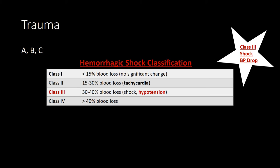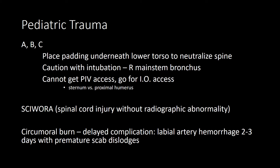There is a chart for the classifications of hemorrhagic shock, Class 1 through 4. Class 1 is less than 15% blood loss with no significant changes. Class 2 is 15 to 30% — that's when you start seeing compensatory mechanisms kick in and the patient will have tachycardia. Class 3 shock is 30 to 40% blood loss and the patient is hypotensive. Class 4 is greater than 40% blood loss. The key pearl is that blood pressure drops in Class 3 shock.